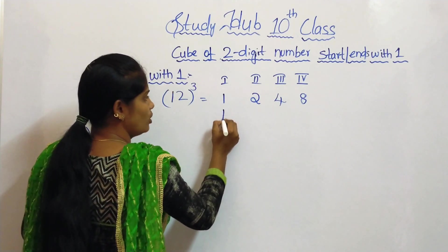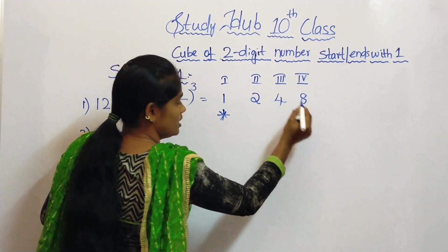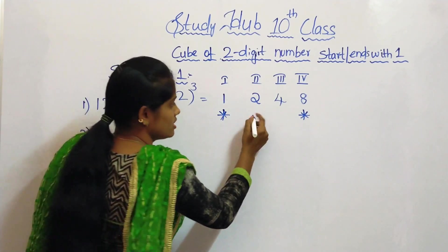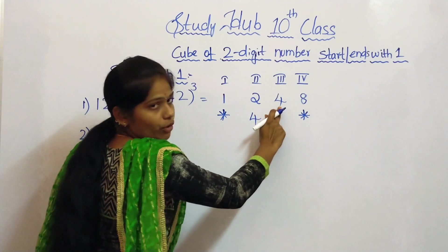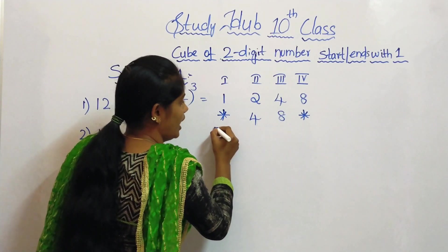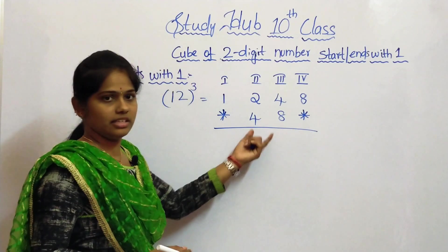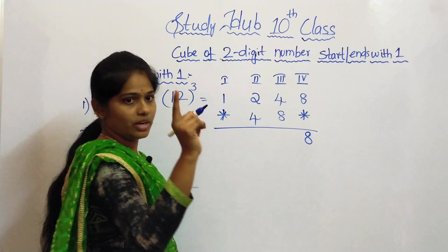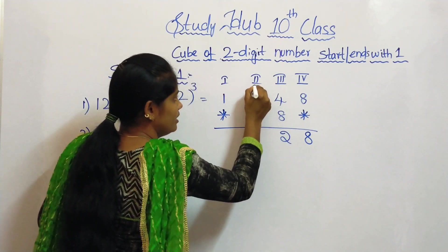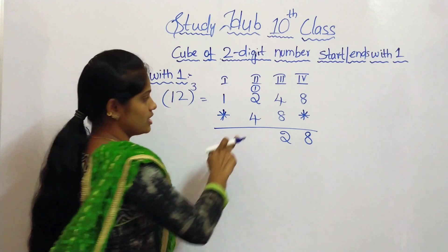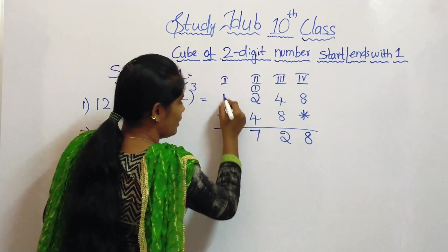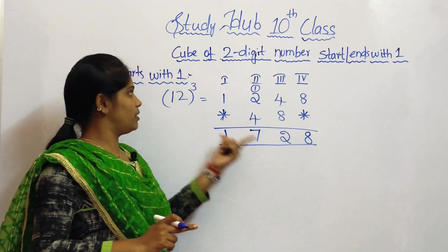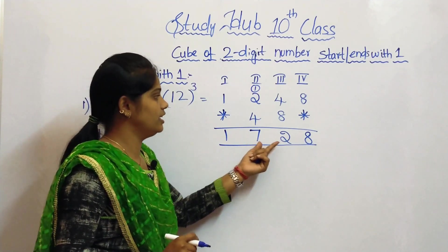Next, exclude the first and last places. Now take twice of these two numbers 2 and 4. Twice of 2 is 4, and twice of 4 is 8. Now start adding these numbers. 8 will be as it is. 4 plus 8 is 12 — write 2 here and carry 1 forward. Next, 4 plus 2 plus 1 is 7, and 1 remains as it is. This is the cube of the number 12. So 12 cubed is 1728.